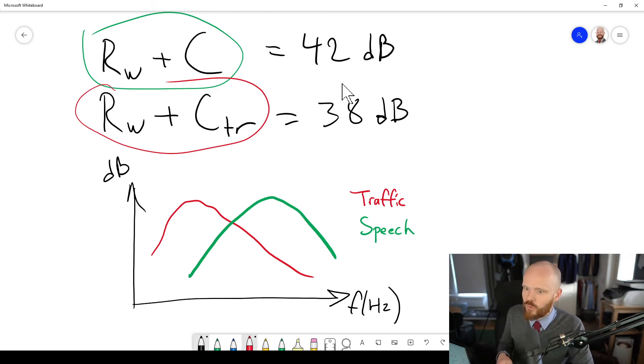But if you do it the other way around so that you have the noisy side facing the traffic and you accidentally write RW plus C when it should have been RW plus CTR, then you're in problem, because then the windows that you prescribe will have lower performance than what the acoustician had calculated, and we don't want that.